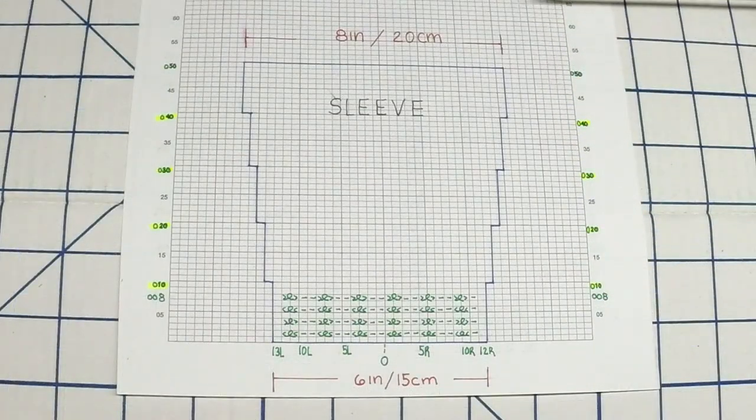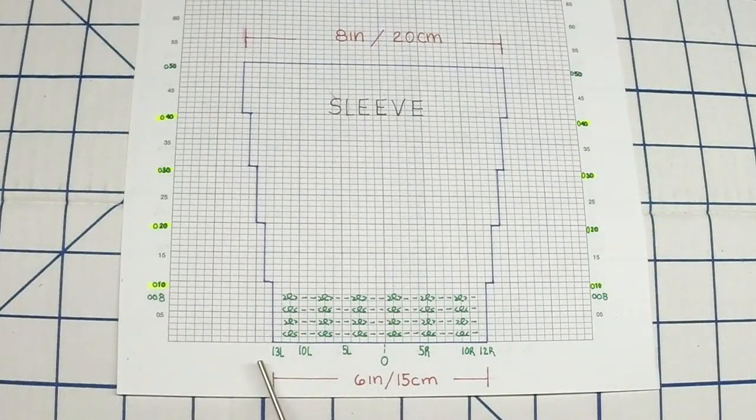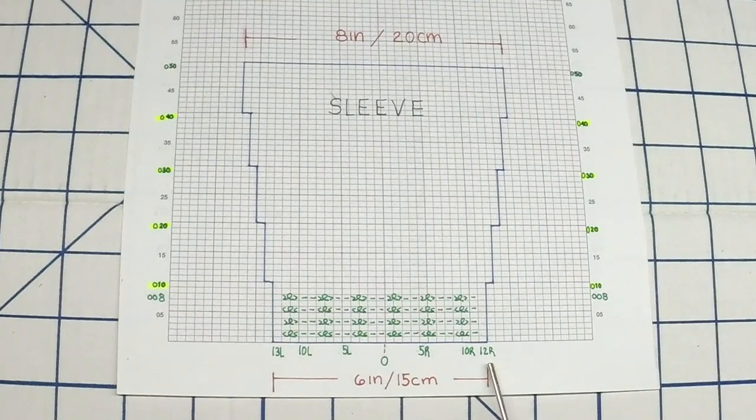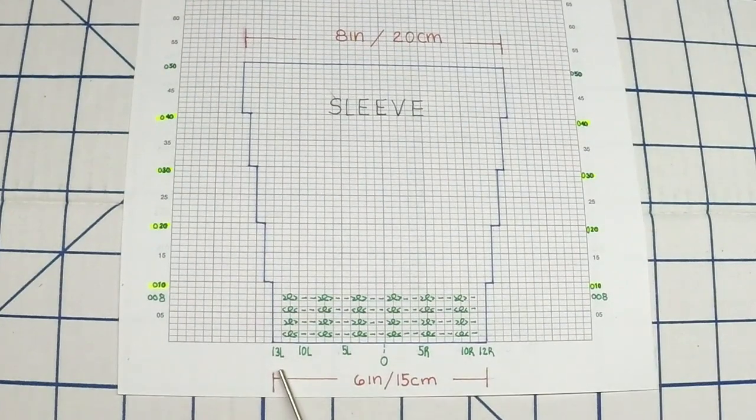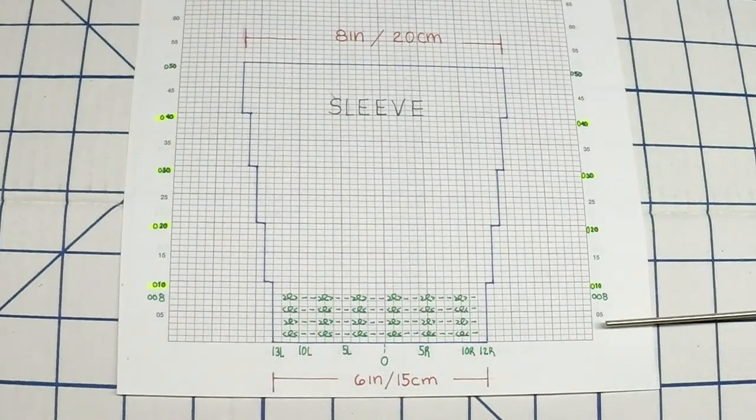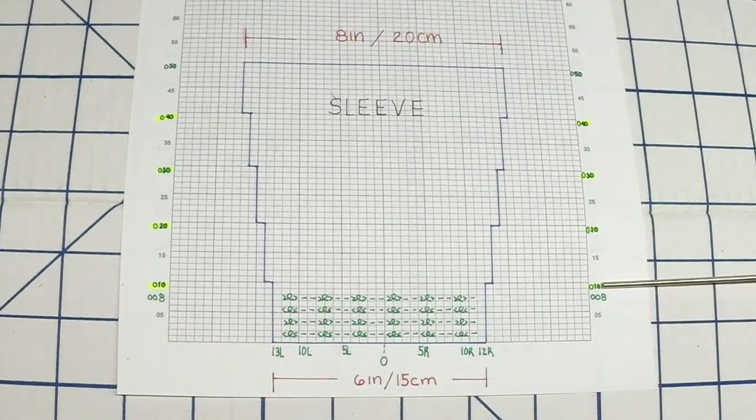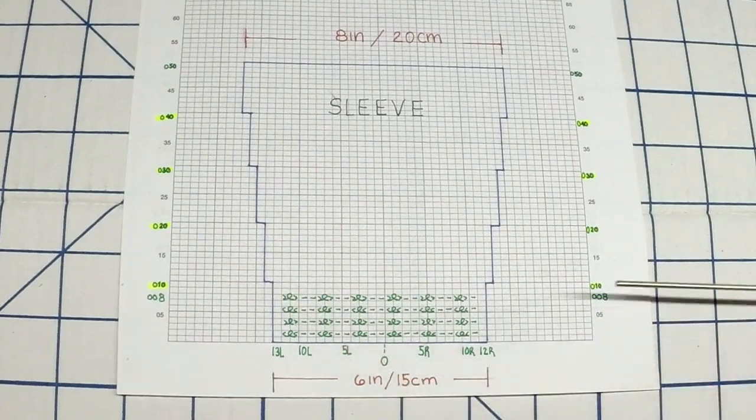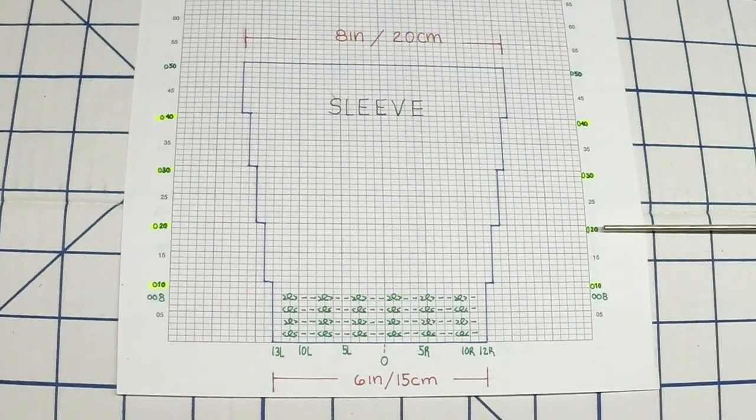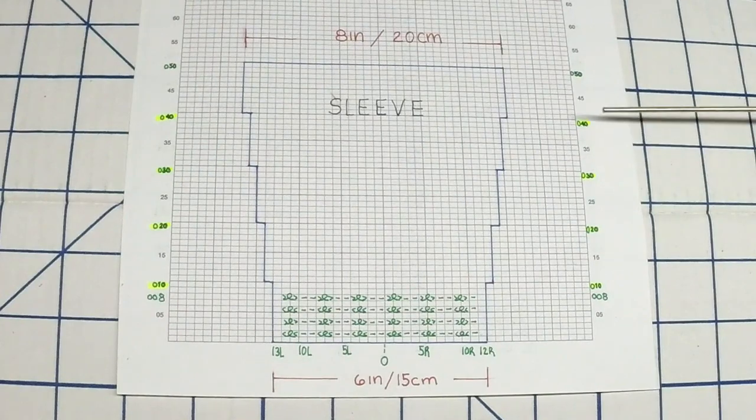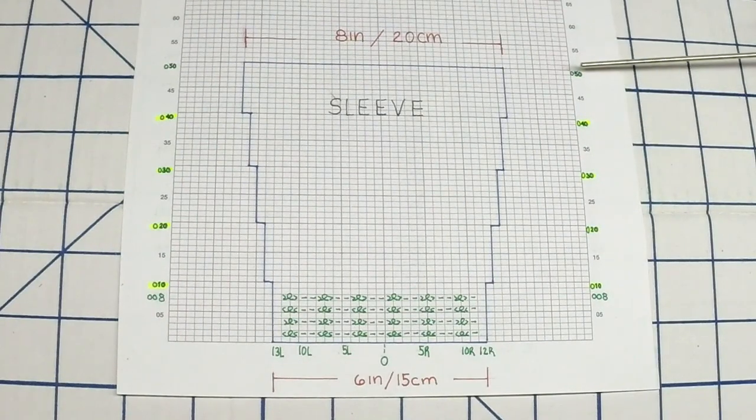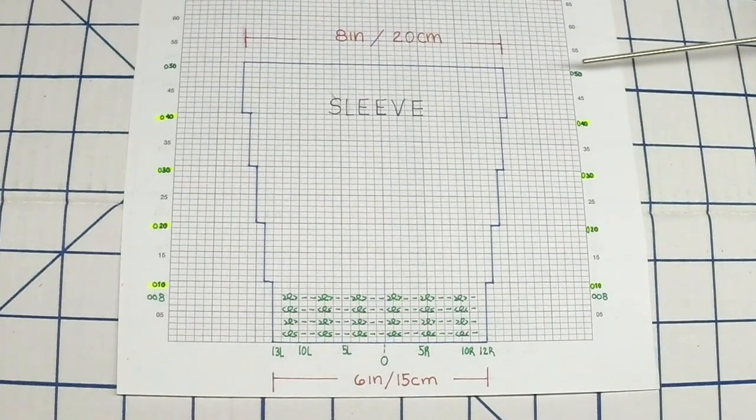This is the schematic for the sleeve. You're going to be casting on 25 stitches, 12 to the right and 13 to the left. You're going to be working in pattern A for eight rows and then increasing one stitch each side at row counter 10, 20, 30, 40, and you're going to be casting off at row counter 50.